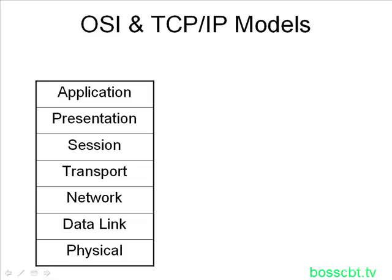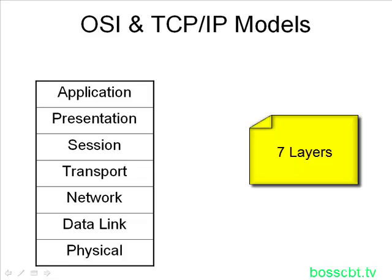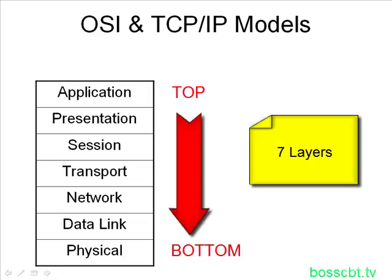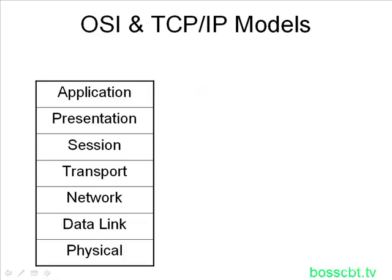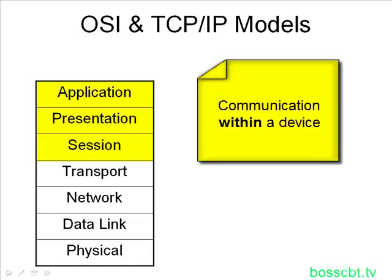Here is the OSI model. The first thing to note is that the OSI model is made up of seven layers. It starts at the top with the application layer and works its way down to the bottom, which is the physical layer. If you were to break this model into two groups to make it a little bit easier to comprehend, the top three layers can be grouped together. These three layers all have to deal with applications within a device — how data is moved and communicated within a single device, everything that might happen in a PC when a particular application is running.